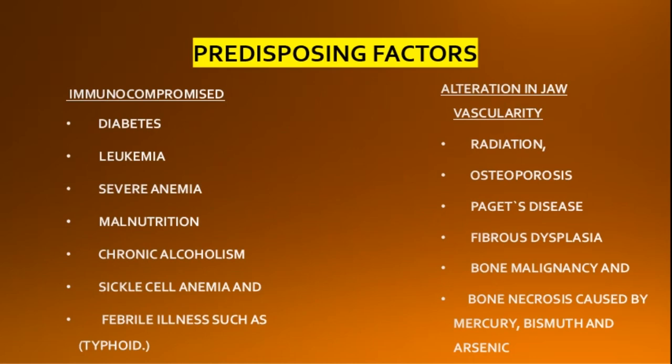The factors that predispose to osteomyelitis are conditions affecting host resistance and conditions that alter jaw vascularity. Immunocompromised patients include those with diabetes mellitus, leukemia, severe anemia, malnutrition, chronic alcoholism, sickle cell anemia, and certain febrile conditions. Conditions that alter jaw vascularity include radiation, osteoporosis, Paget's disease, fibrous dysplasia, bone malignancy, and bone necrosis.